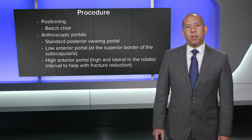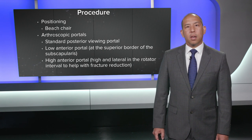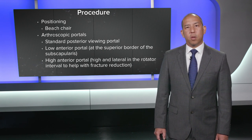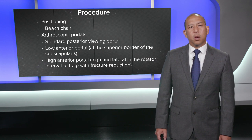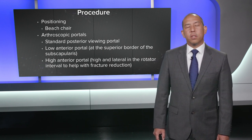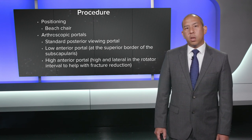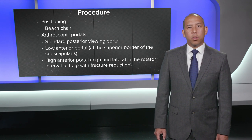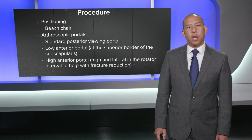If the fragment is one-third of the glenoid or larger, I believe screw fixation is the best treatment, and the standard should be two screws. If it's a small sliver of bone taken with the labrum, a standard soft tissue Bankart labral repair is done. If it's between a sliver and a one-third fragment, I would typically do a bridging sandwich technique with multiple anchors.